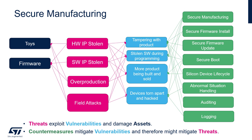If we break down a threat analysis on this secure manufacturing scenario, we can see that Bob is trying to protect his toy and firmware assets. He determines that firmware and software IP being stolen, overproduction, and field attacks are the threats his system faces. He also determines that tampering with products, software being stolen, devices being torn apart, and product piracy are the vulnerabilities he needs to mitigate. He mitigates these with the countermeasures on the right that the STM32 Trust provides.